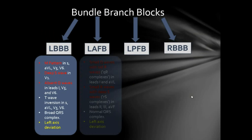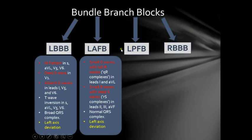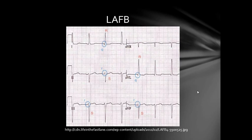Now the second bundle branch block is the Left Anterior Fascicular Block, also known as the left anterior hemiblock. It is characterized by: small Q-waves and tall R-waves in leads 1 and AVL; small R-waves and deep S-waves in leads 2, 3, and AVF; a normal QRS complex; and left-axis deviation. On the ECG, you can see small Q-waves and tall R-waves in leads 1 and AVL, small R-waves and deep S-waves in leads 2, 3, AVF, and left-axis deviation with lead 1 facing upward and leads 2, 3, AVF facing downward.